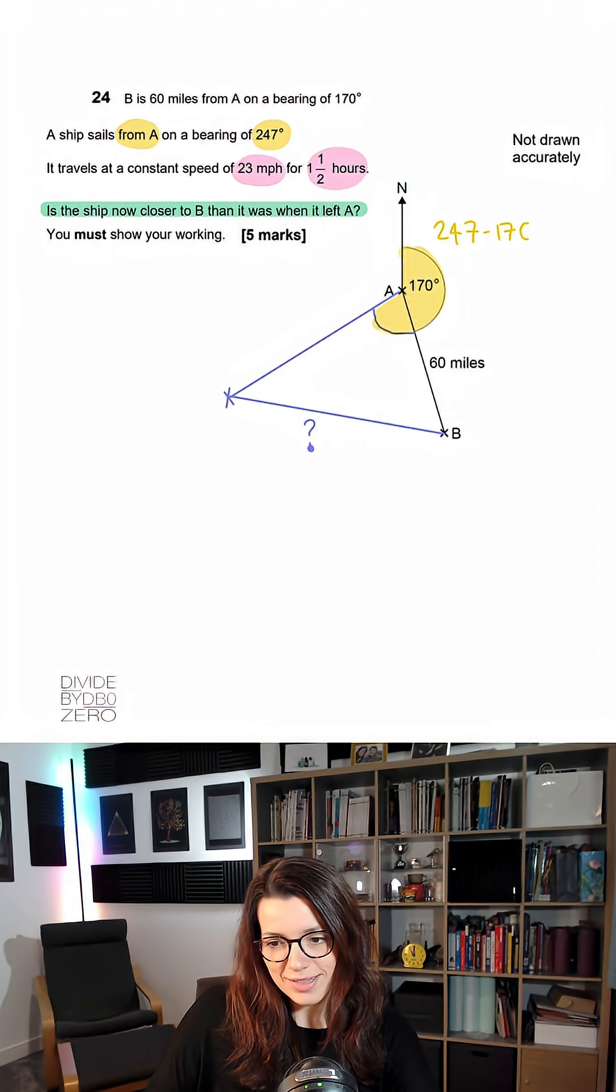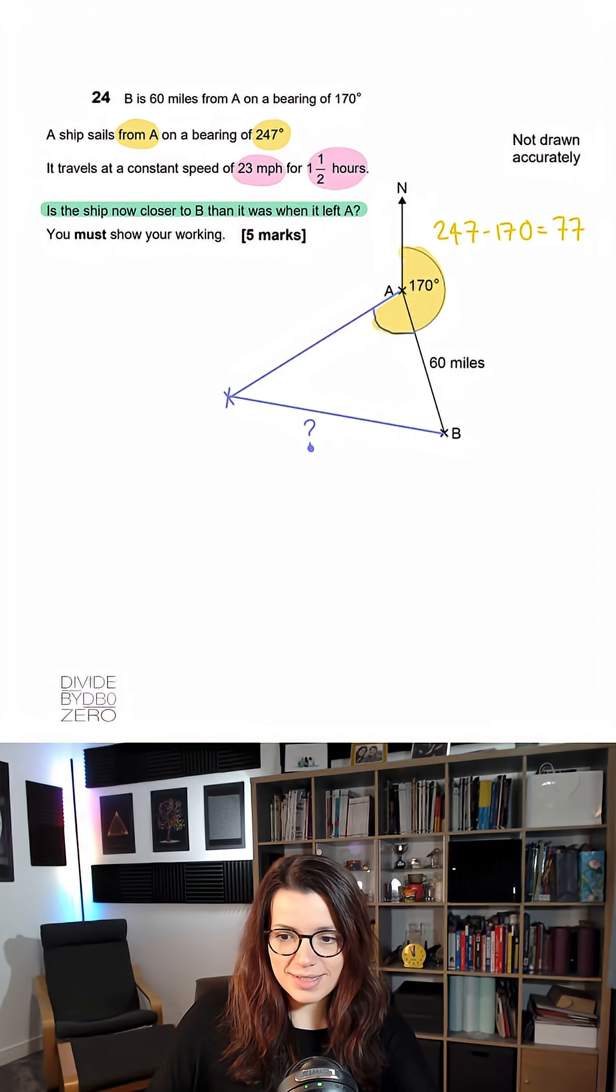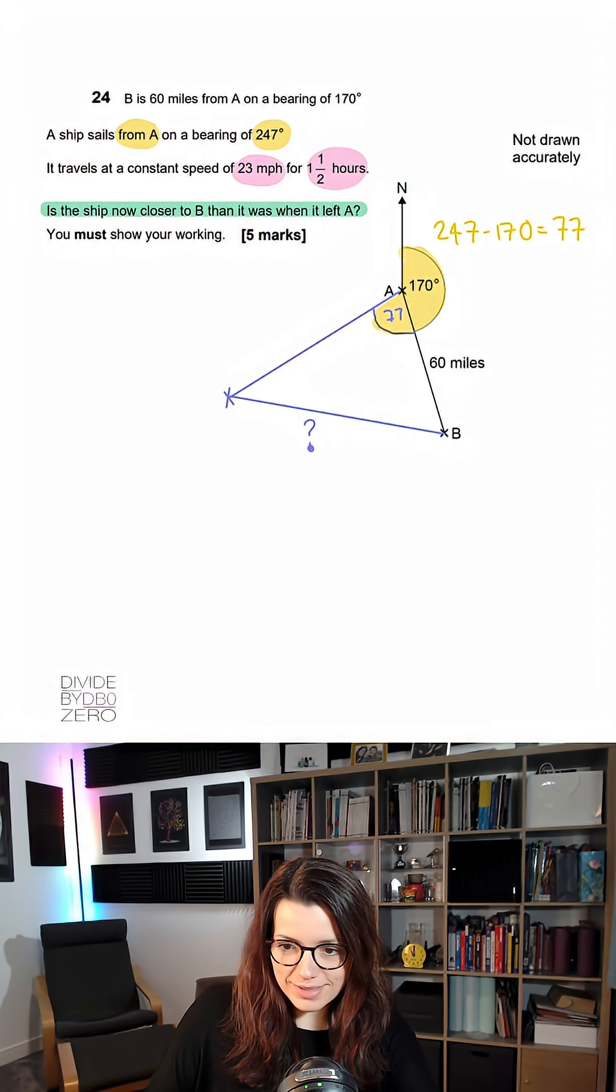We've already got 170. So let's subtract that to get 77, which means this small angle in the triangle is 77 degrees.